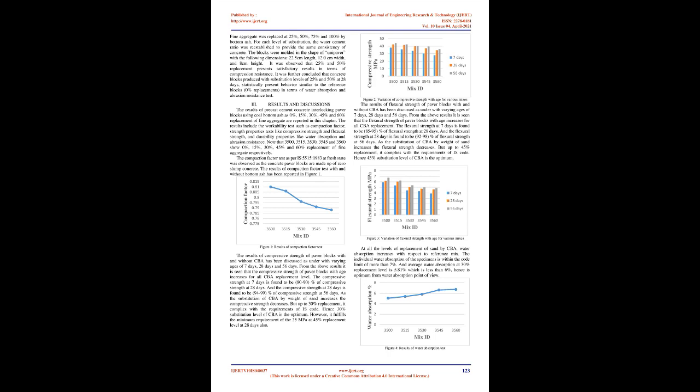Results and Discussions: The results of precast cement concrete interlocking paver blocks using coal bottom ash at 0%, 15%, 30%, 45%, and 60% replacement of fine aggregate are reported in this chapter. The results include workability tests such as compaction factor, strength properties tests like compressive strength and flexural strength, and durability properties like water absorption and abrasion resistance. Mix designations M3500, M3515, M3530, M3545, and M3560 represent 0%, 15%, 30%, 45%, and 60% replacement of fine aggregate respectively.